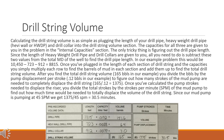The capacities for all three are given to you in the problem in the internal capacities section. The only tricky thing is figuring out the drill pipe length. Since the length of heavy weight drill pipe and drill collars are given to you, all you need to do is subtract these two values from the total MD of the well to find the drill pipe length. In our example problem this would be 10,450 minus 723 minus 912 equals 8,815. Once you've plugged in the length of each section of drill string and the capacities, you simply multiply each row to find the barrels of mud in each section and add them up to find the total drill string volume.